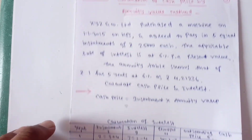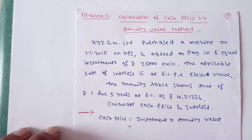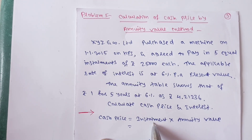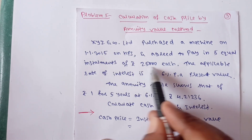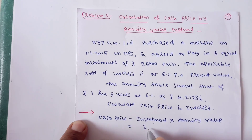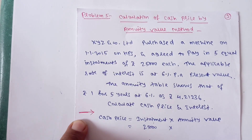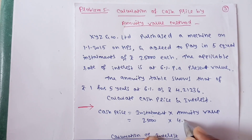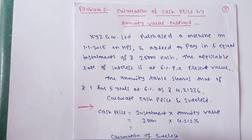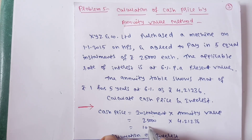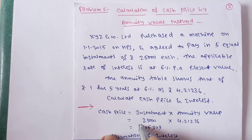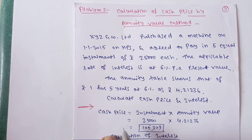For the calculation, first we have to calculate cash price. The calculation of cash price is very easy. Cash price equals installment multiplied by annuity value. The installment is Rs.25,000, and the annuity value is 4.21236. So, Rs.25,000 × 4.21236 = Rs.1,05,309. This is our cash price.